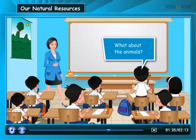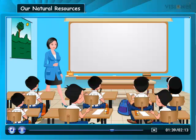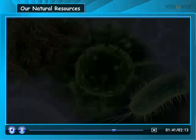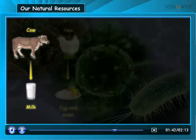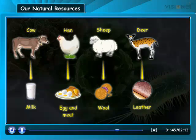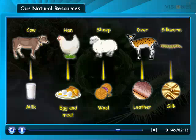What about the animals? How are they useful to us? Children, they provide us with milk, eggs, meat, wool, leather and silk.